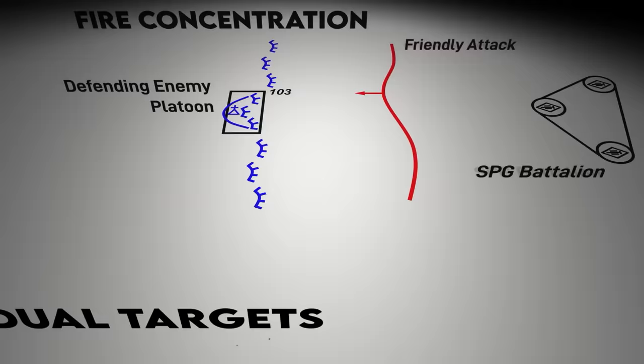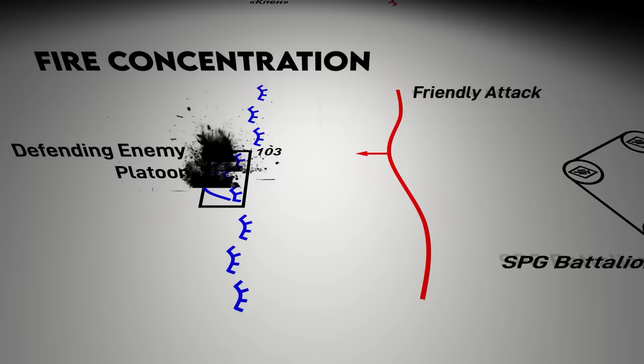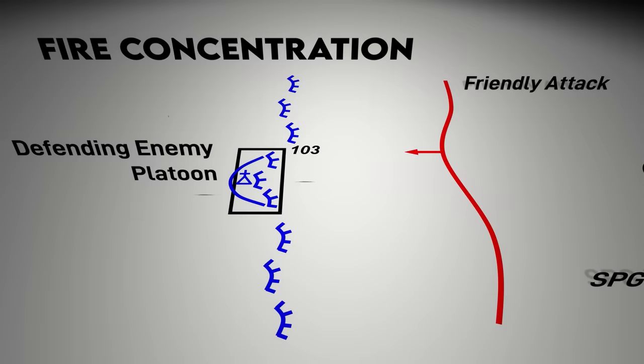A fire concentration is a black square with a concentration number. This is a more substantial fire mission, possibly involving multiple firing batteries or battalions firing at the same target box at the same time. This would be more appropriate for destroying an entire enemy unit.